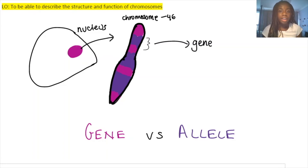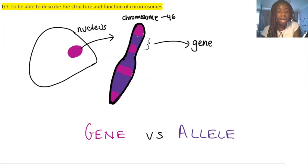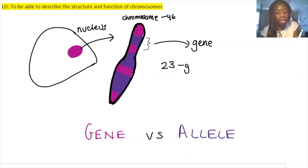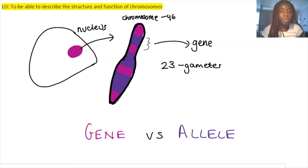Each body cell has 46 chromosomes, but certain cells have the haploid number — 23, which is half. Cells with 23 chromosomes are known as gametes, such as egg cells and sperm cells. The reason they have 23 chromosomes is that when fertilisation occurs and two of these cells fuse, 23 plus 23 equals 46, so the normal chromosome number is restored.